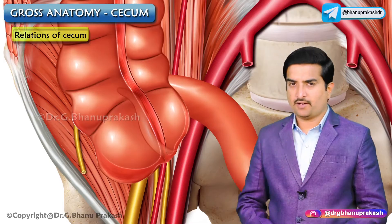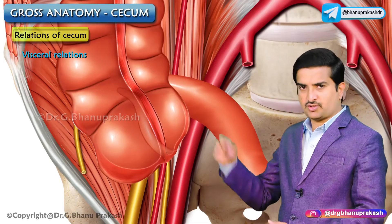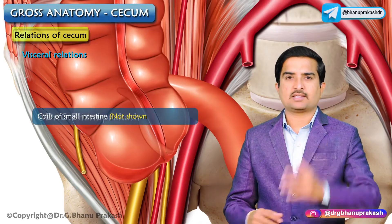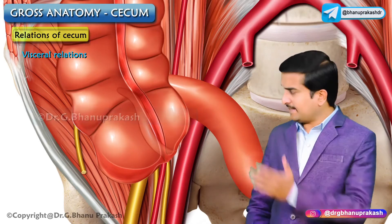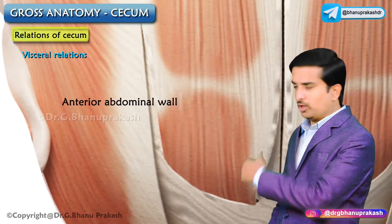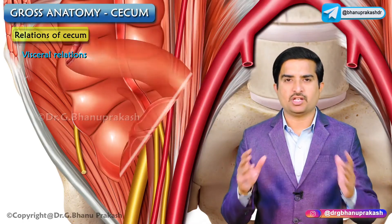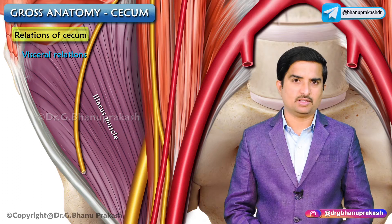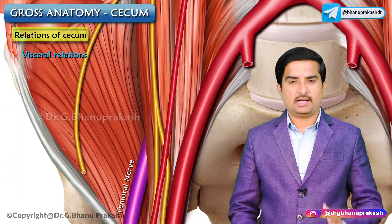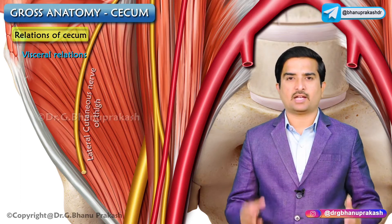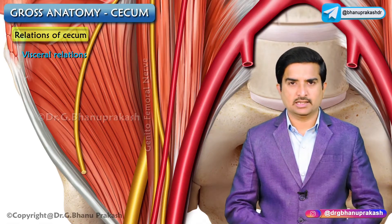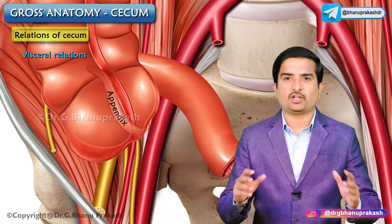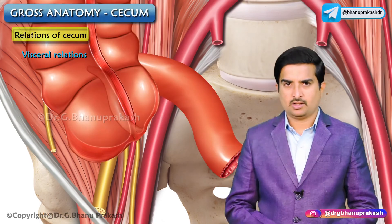The anterior visceral relations of the cecum are coils of the small intestine and the anterior abdominal wall. The posterior relations are the psoas major and iliacus muscles, femoral nerve, lateral cutaneous nerve of the thigh, genitofemoral nerve, gonadal vessels, and the appendix in the retrocecal recess.